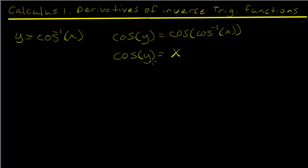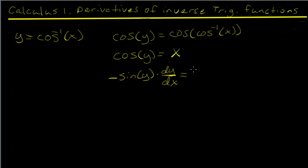Differentiating both sides and remembering to implicitly differentiate the left side, we get negative sine of y times dy/dx equals one (the derivative of x). Solving for dy/dx, we get negative one over the sine of y.